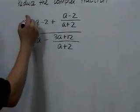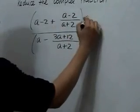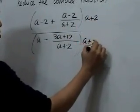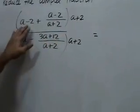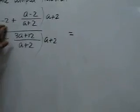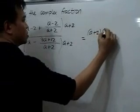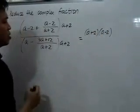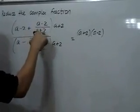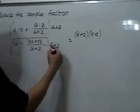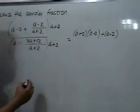What we'll do next is to multiply both the numerator and the denominator by that expression a plus 2. So, a plus 2 times — we can already consider this as one term — a plus 2 times quantity a minus 2 will give us this. And a plus 2 times this expression, you can cancel out the a plus 2, will leave us with positive quantity a minus 2.